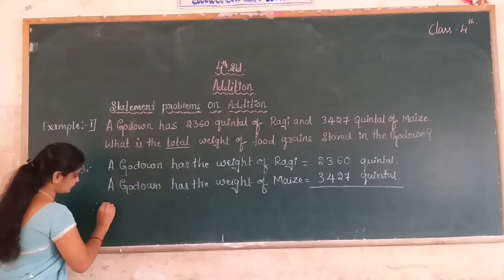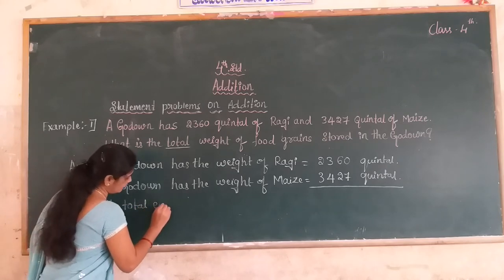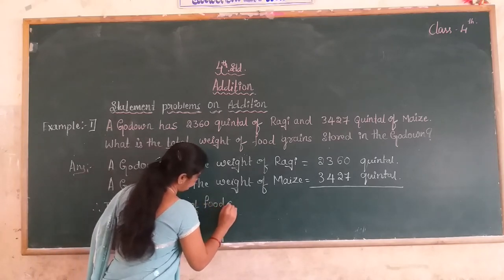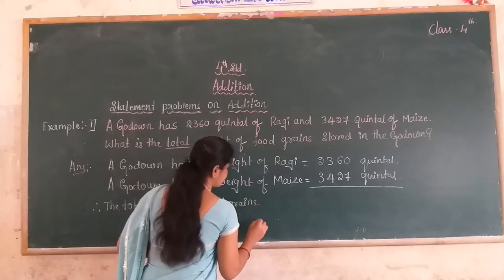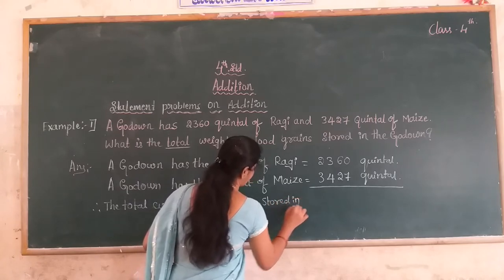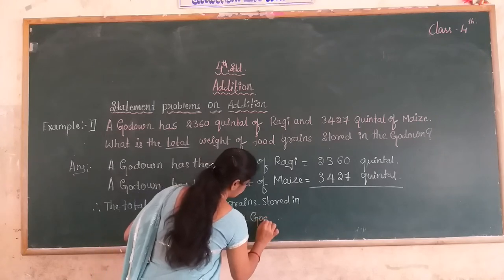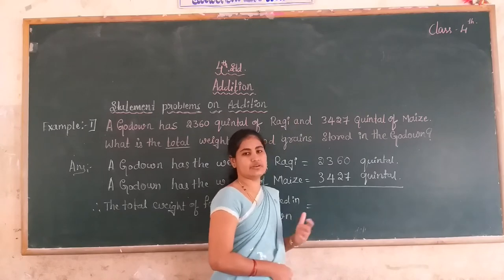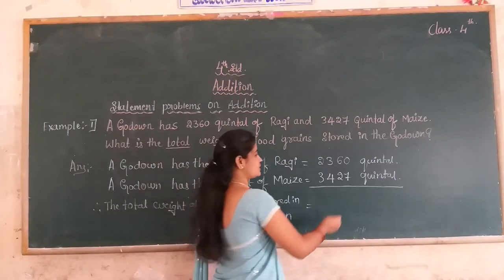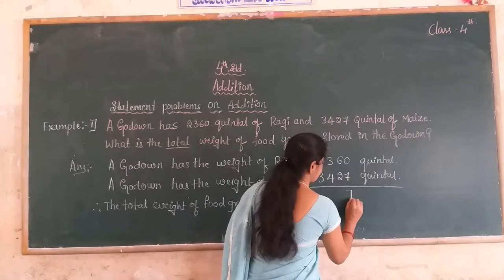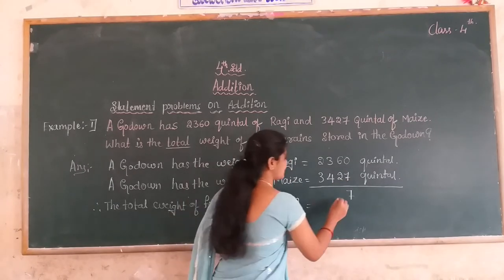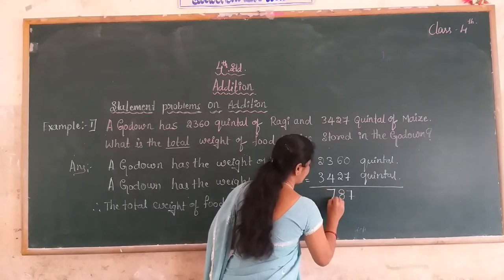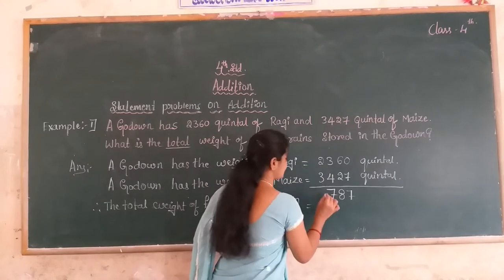Write: for the total weight of food grains stored within the godown. You start addition from the ones place. 0 plus 7 is 7. Then come to the next place — 6 plus 2 is 8. And 3 plus 4 is 7. Dear students, you come to the thousands place — 2 plus 3 is 5.